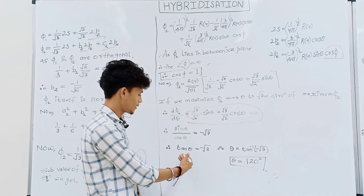From the normalization condition we calculate b2 = √(2/3). With the values of b2, d2, and a2 substituted into the phi2 equation, we differentiate with respect to theta. After differentiating, we get tan(theta) = √(-8). Taking the inverse, we get theta equal to 109 degrees and 28 minutes. Therefore, we can say that the SP3 hybrid orbitals have an angle of 109 degrees and 28 minutes.